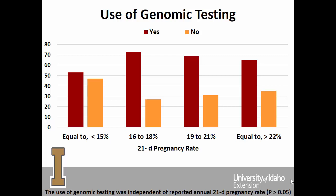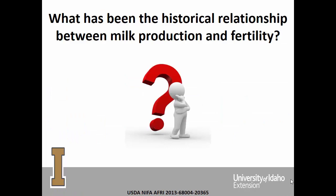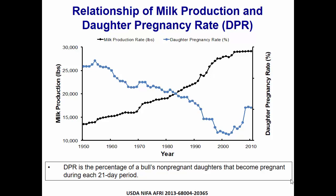What has been the historical relationship between milk production and fertility? Inverse — one goes up, the other goes down. We've been very good at selecting for milk production, and that's a good thing. Milk production has gone up from 1950 to the 2000s, while fertility has gone down. We're going to talk about daughter pregnancy rate today — that's the percentage of a bull's non-pregnant daughters that became pregnant during each 21-day period.